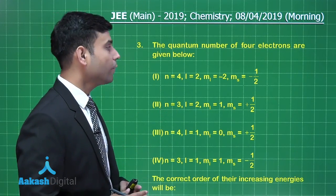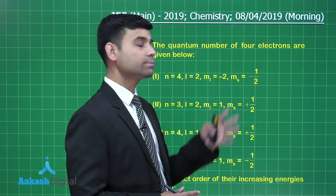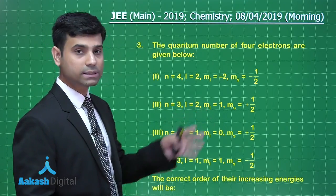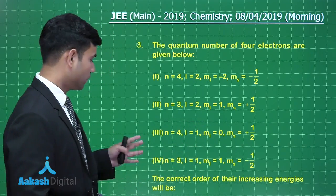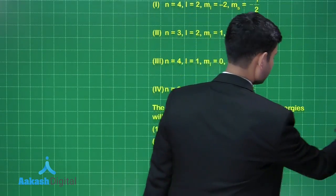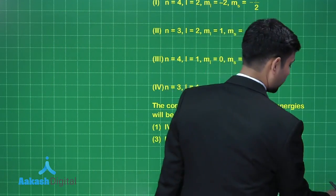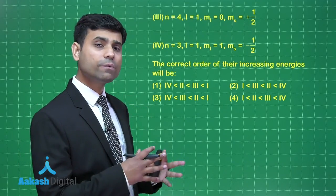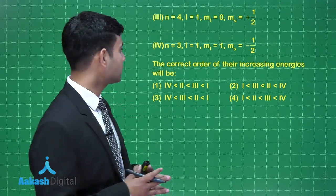The next question gives the quantum numbers of four electrons: first, n=4, l=2, ml=-2, ms=-½; second, n=3, l=2, ml=1, ms=+½; third, n=4, l=1, ml=0, ms=+½; fourth, n=3, l=1, ml=1, ms=-½. The question asks for the correct order of increasing energies. According to the Aufbau principle, electrons are filled in increasing order of energies, determined by the n+l rule — the higher the value of n+l, the higher the energy.